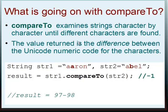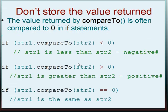So when compareTo examines string character by character, it checks until different characters are found. The value returned is the difference between the Unicode numbers of the characters. Here we have string1 arn and string2 abl. We have two a's followed by r-o-n and a-b-l. The result equals string1.compareTo(string2). We have negative one because arn is considered less than abl, because a is less than b in the Unicode scale. As we have up here, a is 97, b is 98. So the result is actually 97 minus 98, because string1 is here, string2 is here.